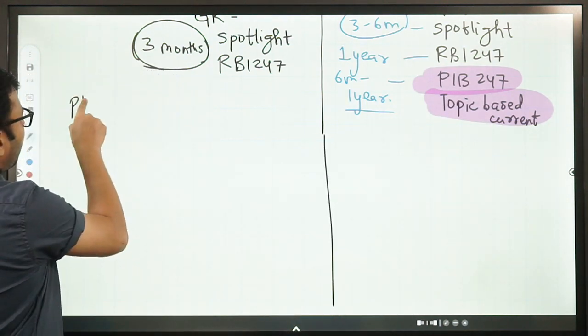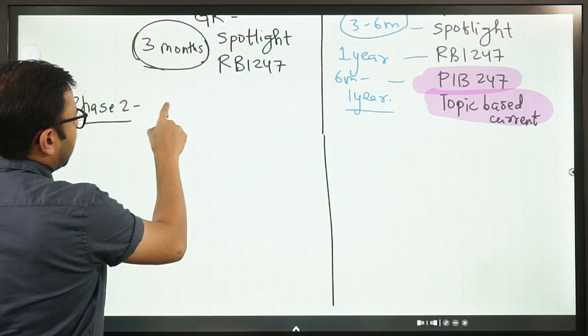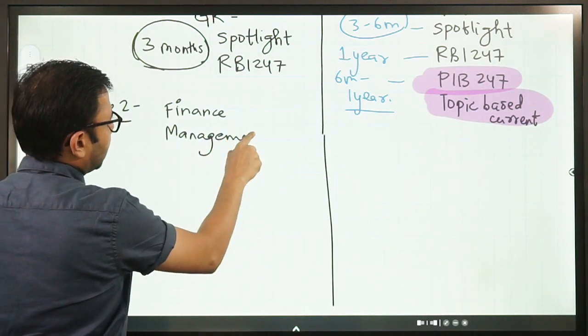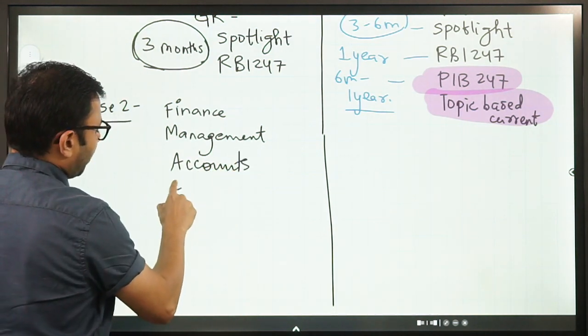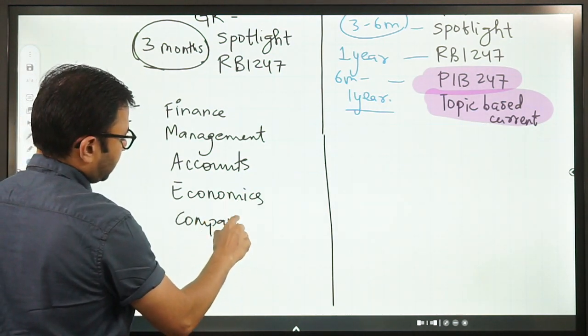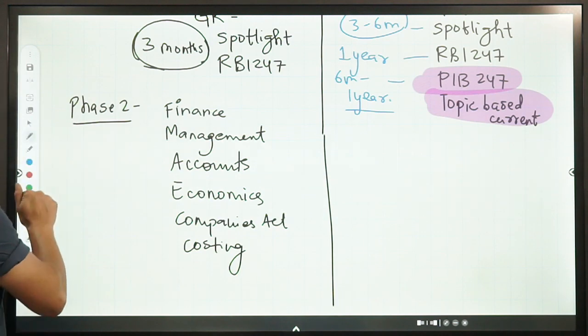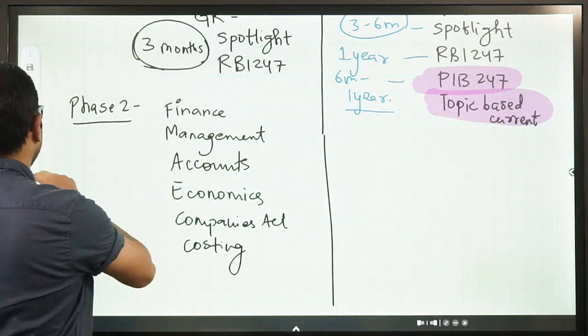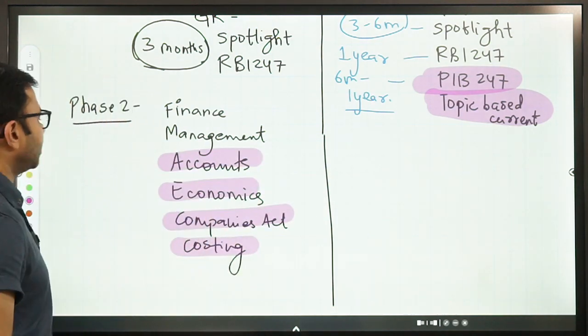Let's now come to phase two of both these exams. Let me first start with SEBI. In SEBI, you have finance, you have management. There are a total of six subjects: finance, management, then there is accounts, then there is economics, then we have Companies Act, and finally we have costing. Questions from only these six subjects are asked. There is no current affairs in SEBI phase two. Let me highlight the unique areas. Accounts, economics, Companies Act, and costing. These are the unique areas.